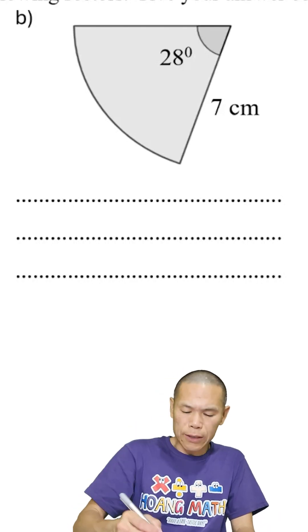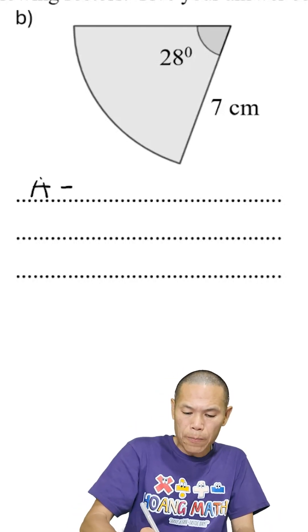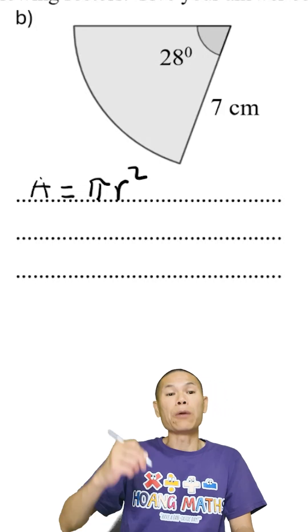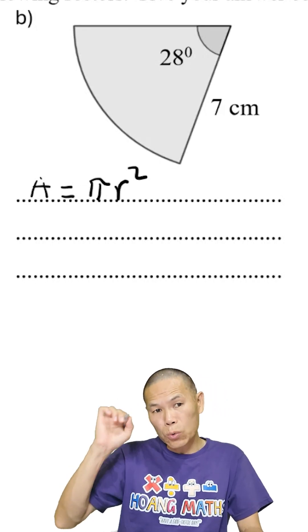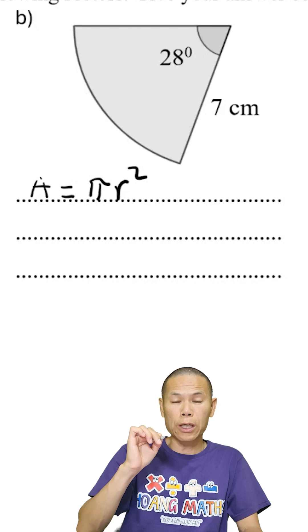So we know that area of a circle, A, is pi R squared. And we know that that will give us the whole circle, area of the whole circle.